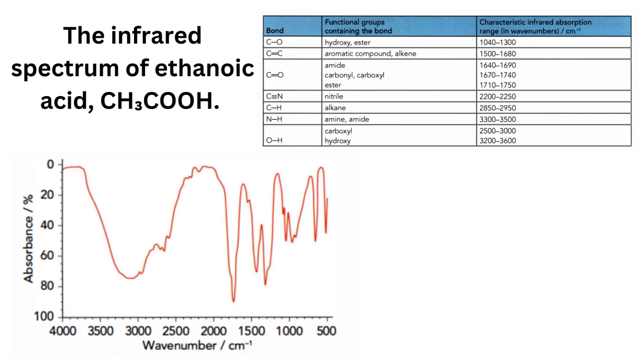The next one is the spectrum of ethanoic acid, CH₃COOH. The O-H group is having a broad peak which represents the O-H of a carboxyl group, which lies in the area 2500 to 3000.